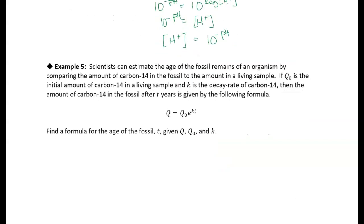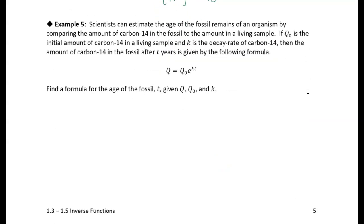Now let's take a look at this next example. So here we have an exponential equation. Scientists can estimate the age of fossil remains of an organism by comparing the amount of carbon-14 in the fossil to the amount in a living sample. So we're defining some variables here. Q0 is the initial amount of carbon-14 in a living sample, and K is the decay rate of carbon-14. So we have this equation.